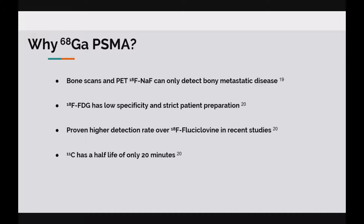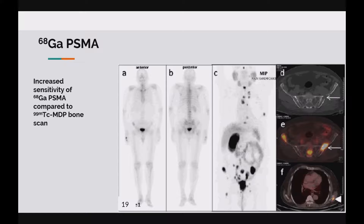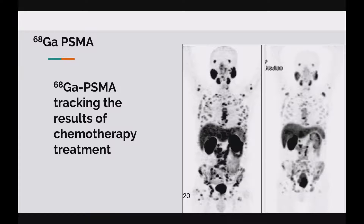FDG also has more risk of a scan being compromised due to strict patient preparation. Another PET tracer is carbon-11 choline, which has a half-life of only 20 minutes, making it an unviable option in most departments. This image shows the increased sensitivity of gallium-68 PSMA compared to a 99m technetium MDP bone scan for detection of bony metastases, as well as being able to identify a lymph node metastasis and a deposit within the left infraspinatus muscle. These images show the ability to track progress of chemotherapy treatment using standard uptake values, with pre-chemotherapy showing an SUV max of 35.6 within the lumbar spine, reduced to 15.8 after three cycles of chemotherapy.